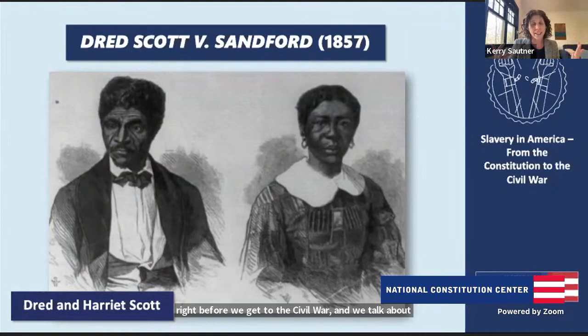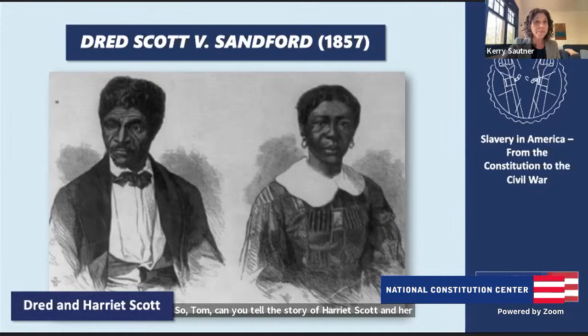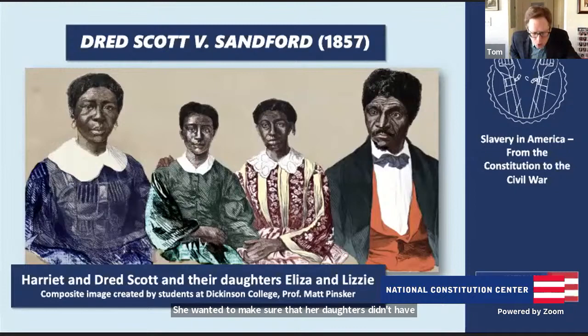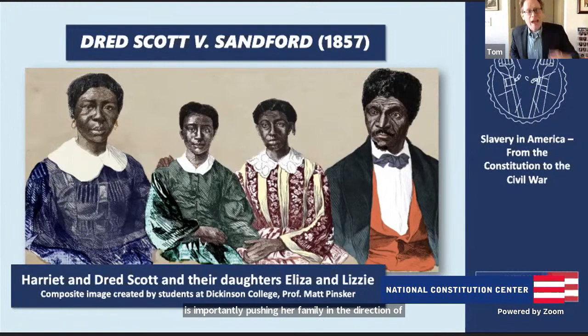At the Constitution Center we have a conversation about storytelling and whose voice and agency we tell. We found so much power in Harriet's story. Harriet Scott was an enslaved mother with two young daughters, and she wanted to make sure her daughters didn't have to live under the institution of slavery. She pushed to bring the family's case to the courts, arguing that they were free because they had been brought onto free soil — these were known as personal liberty suits. Harriet Scott was importantly pushing her family toward going to court and fighting for their freedom.